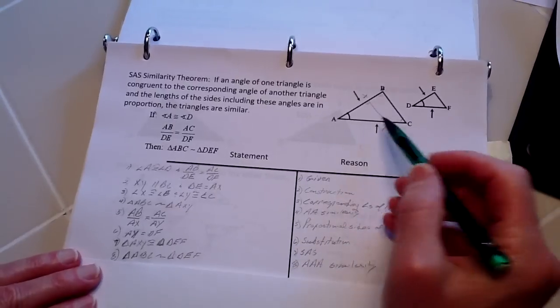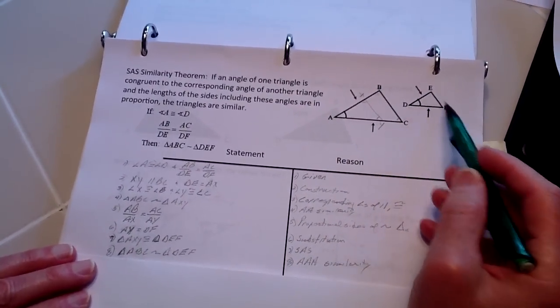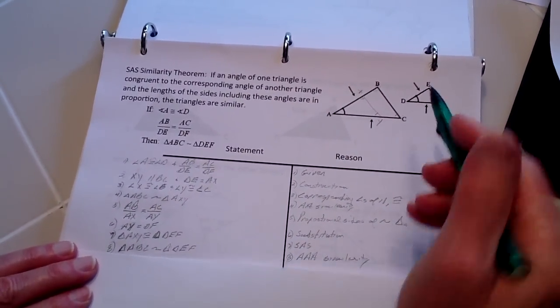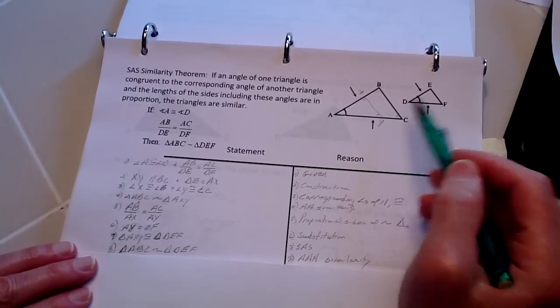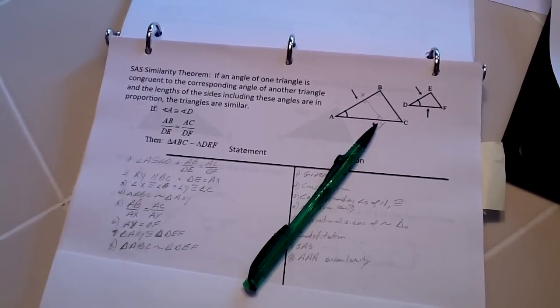Therefore, from that, ABC and DEF are going to be similar because all the angles are congruent. And that concludes the proof of the theorem.